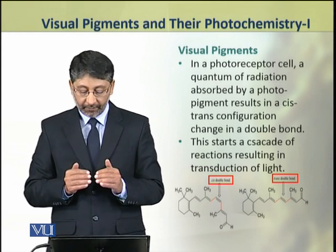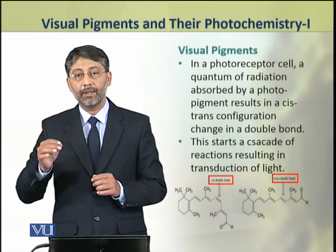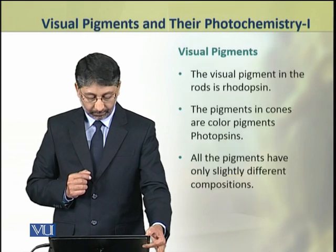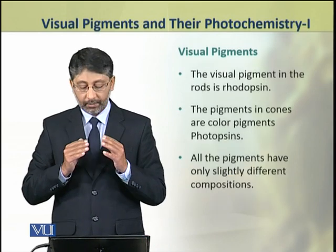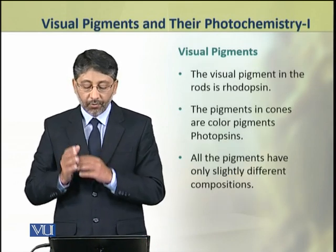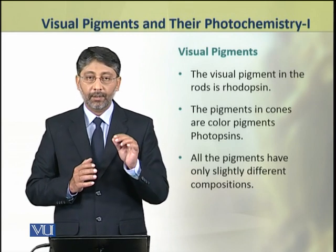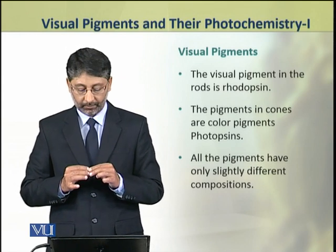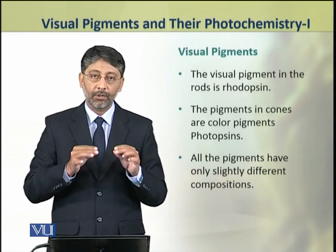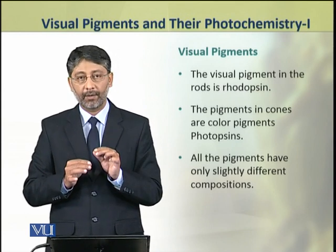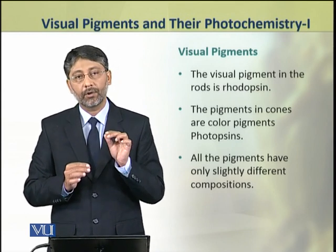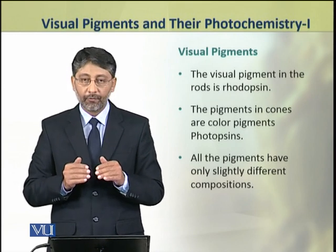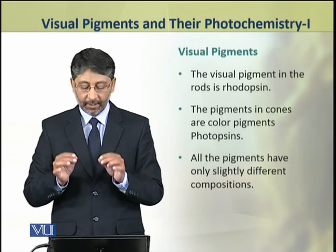This change starts a cascade of chemical reactions which result in the transduction of light. The visual pigment in rod cells is called rhodopsin. The pigments in cone cells are color pigments and are called photopsins. All these visual pigments have only slightly different compositions.